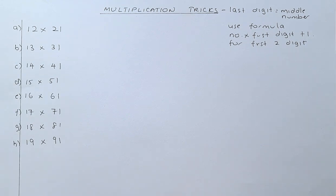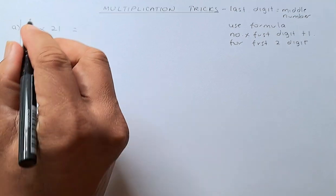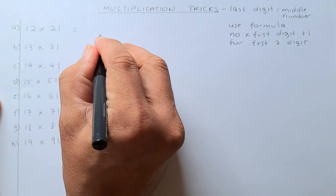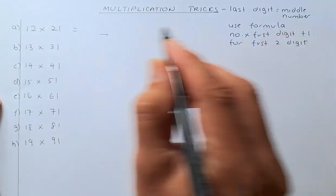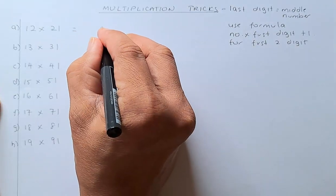So, the trick is this. We will go straight to the trick. If you have 12 multiplied by 21, the last digit is the middle number. So, the middle number is 2, and the last digit is going to be 2.